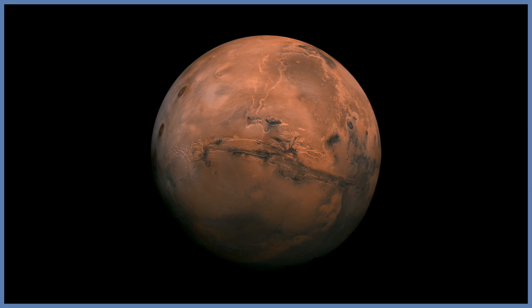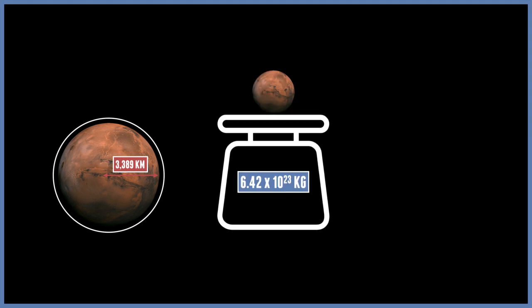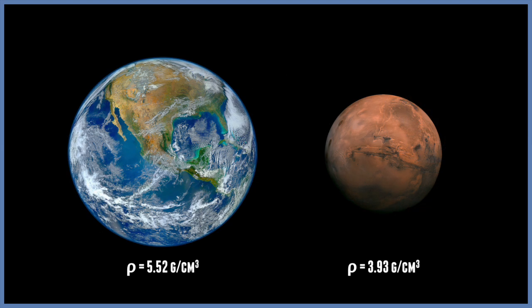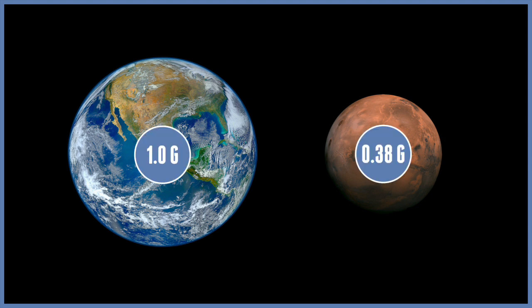Mars has a size, mass, and density that are very small compared to Earth. It has a radius of over 3,000 kilometres and a mass of 6.42 times 10 to the 23 kilograms. With its lower density, its gravity is 3.72 metres per second squared, which calculates to 0.38g — actually closer to the Moon's gravity than to Earth's.